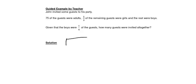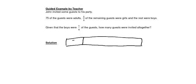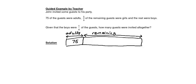Draw a simple model to represent the total number of guests. This model will represent the total number of guests. I know that 75 were adults, so I have 75 here and they are adults. One-third of the remaining guests were girls — let me label the remaining. One-third of the remaining, so I cut it into three parts, and this part represents girls.